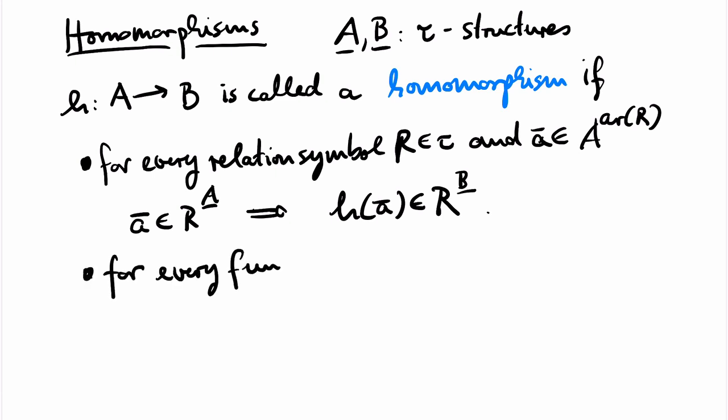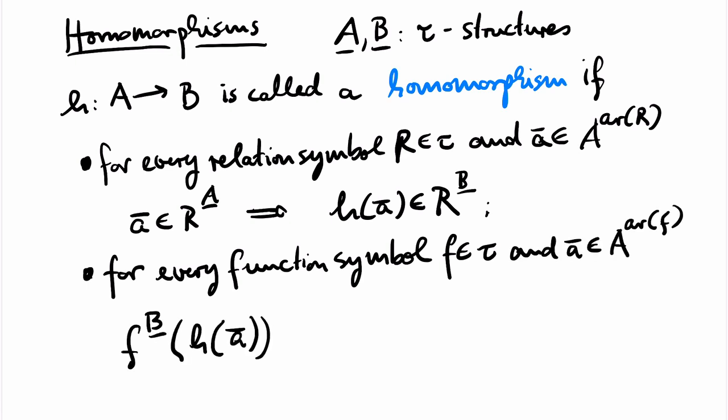Moreover, for every function symbol F in the signature, instead of first applying H component-wise to a tuple and then applying the function for F in B, we can first apply the function for F in A and then apply H component-wise. And we will get the same value.